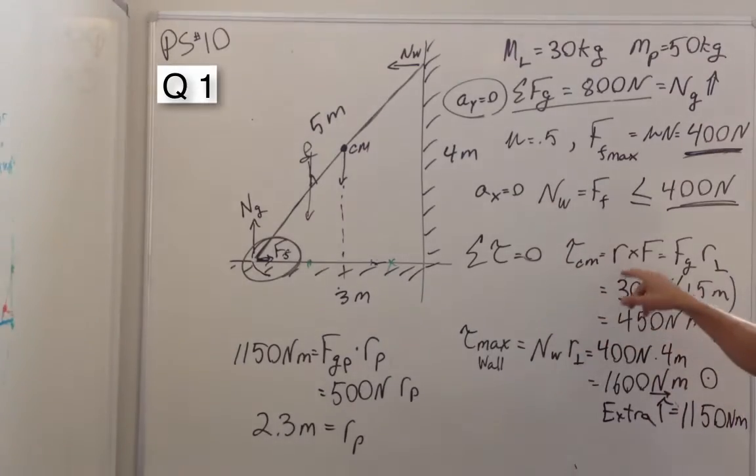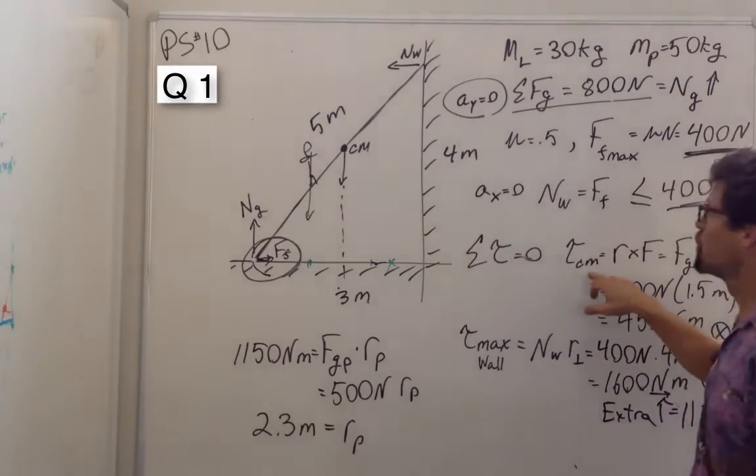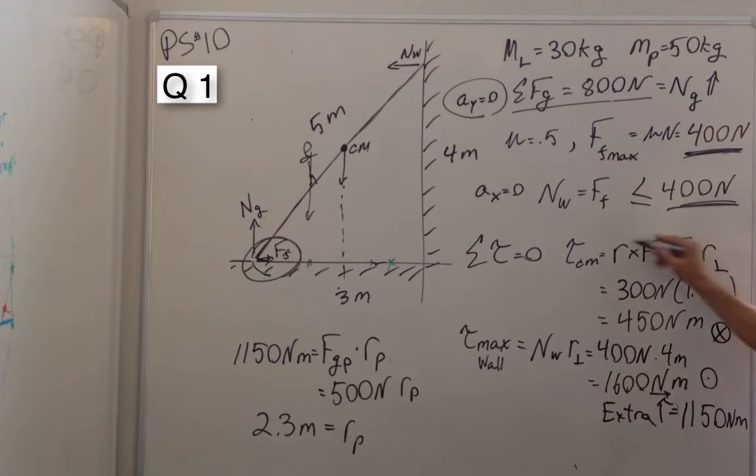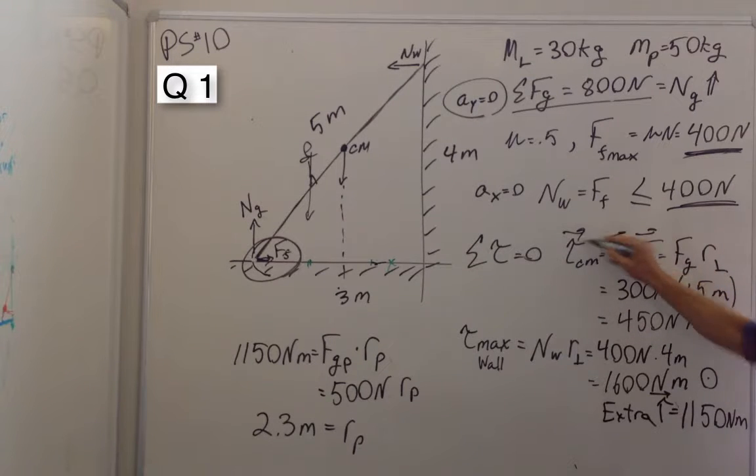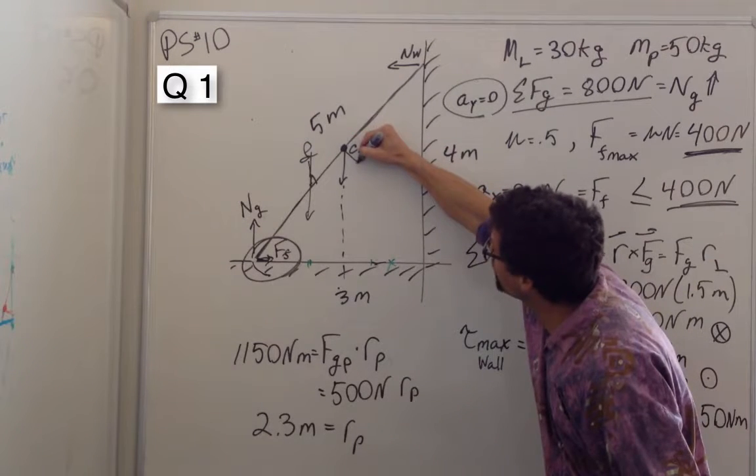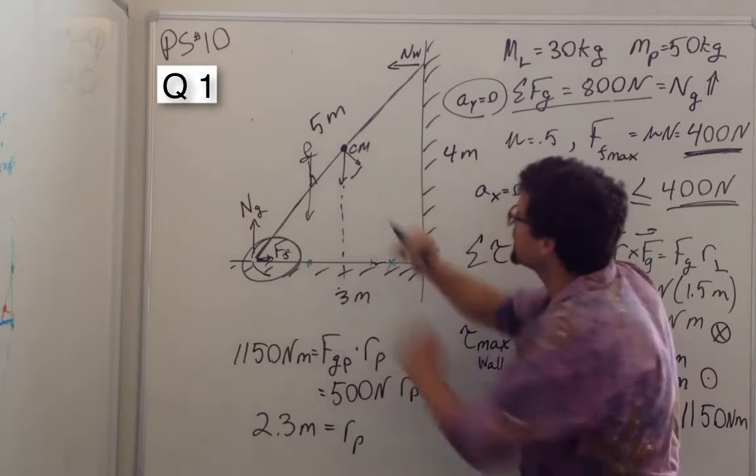And so we can find these torques. The torque due to the mass of the ladder at the center of mass is the cross product of the radius and the force of gravity. And we can make that equal to the perpendicular component of the force of gravity if we want, times the radius.